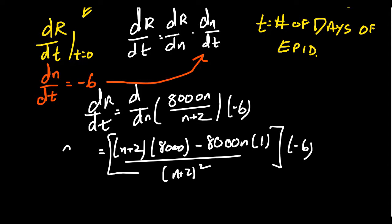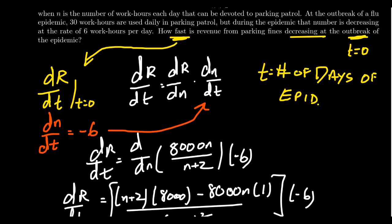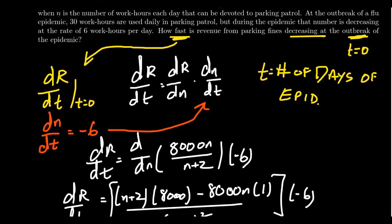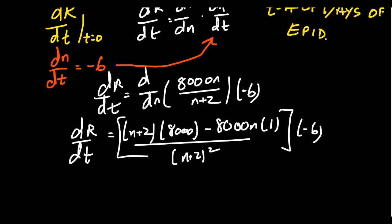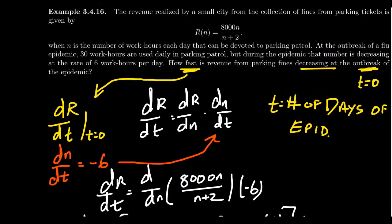This is going to give us our dR/dt, this is the general function. Now we don't necessarily want the general function, we want it when it is at zero. We just plug in t equals zero. But wait, where are there t's to plug in? Well, that's because at the outbreak of this epidemic there were 30 work hours. So if t equals zero, that means N equals 30.